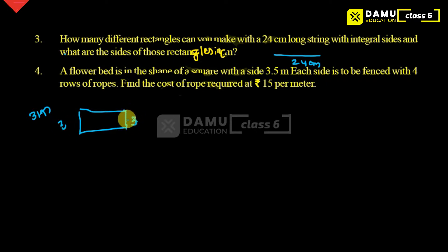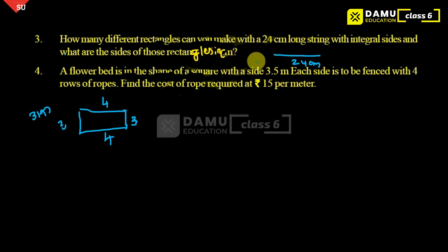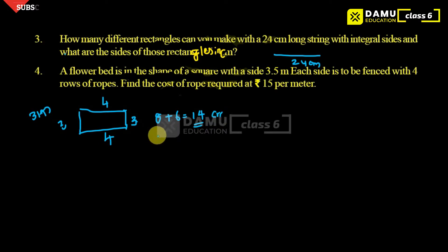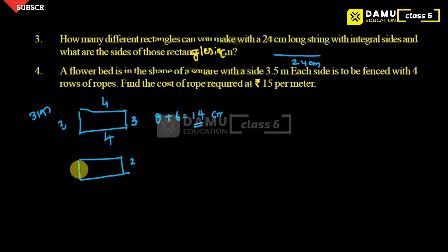Let's take 3 here, 3 here, 4, 4. The perimeter of this is 4 plus 4 plus 3 plus 3, which gives 8 plus 6 equals 14 centimeters. The remaining length is 10, so with that remaining 10 we can say: 2 here, 2 here, 3 and 3. So 3 plus 3 equals 6, plus 4 equals 10.